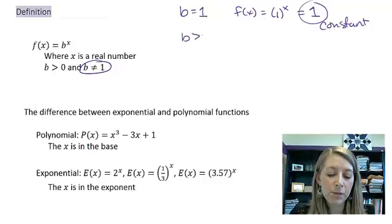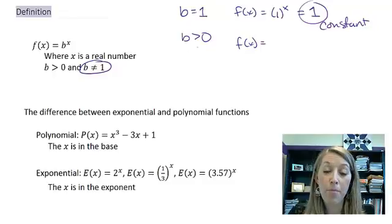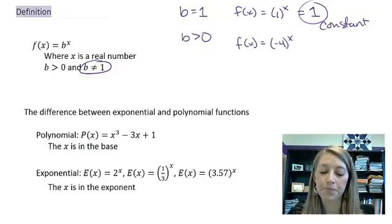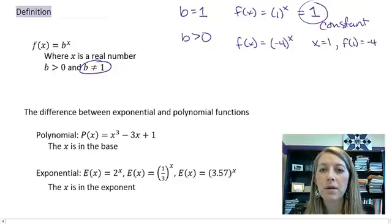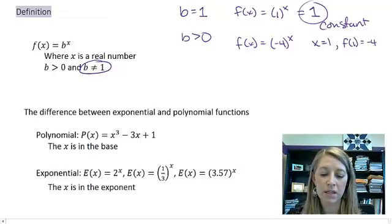Let's talk about why b must be greater than zero. If I had a function where my base was a negative number, like negative 4 to an exponent, let's just say we can plug in values here. If x is equal to 1, f of 1 is equal to negative 4. But let's play devil's advocate here. What numbers can I not plug into this?